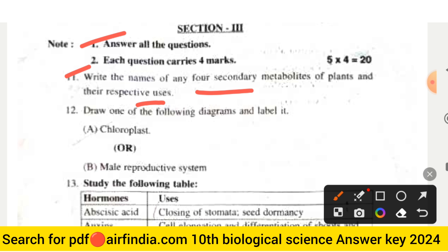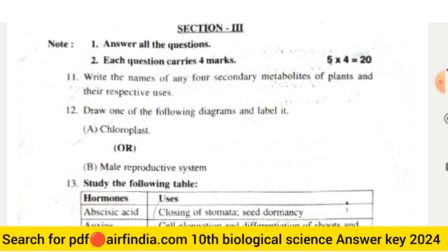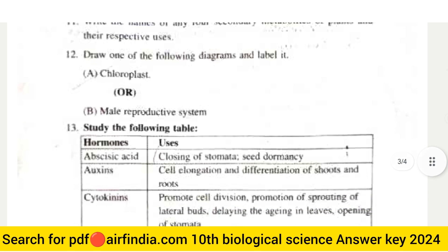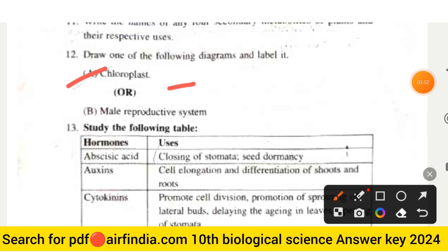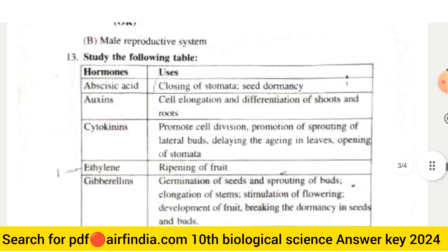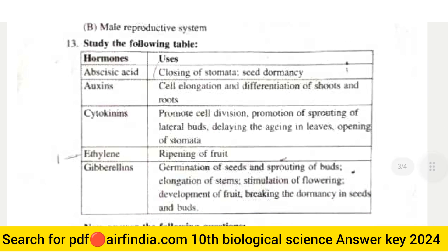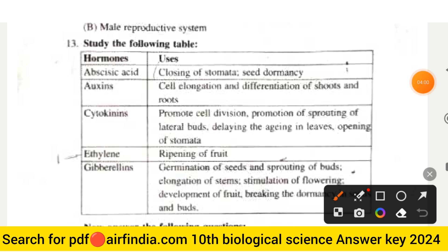Question twelve: Draw one of the following diagrams and label it — option (a) is chloroplast, and option (b) is the male reproductive system. Question thirteen asks you to study a table of plant hormones and their uses, including abscisic acid (ABA), auxins, cytokinin, ethylene, and gibberellin.